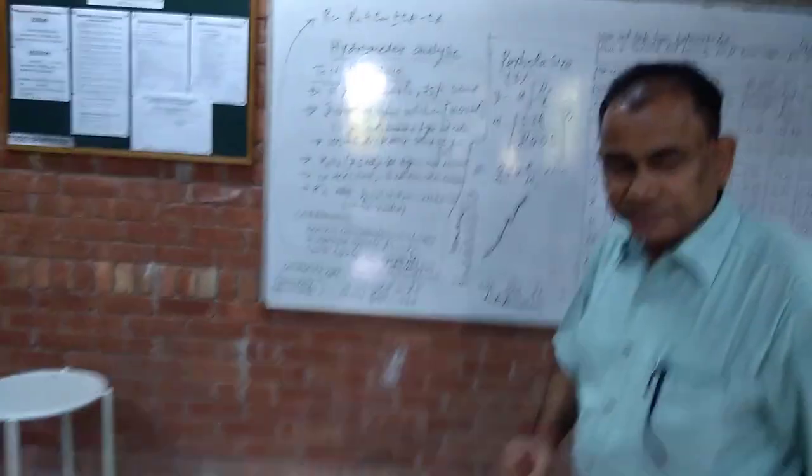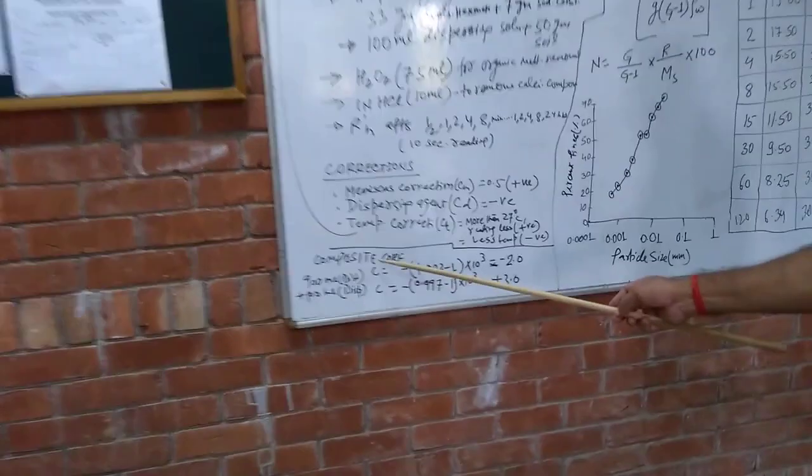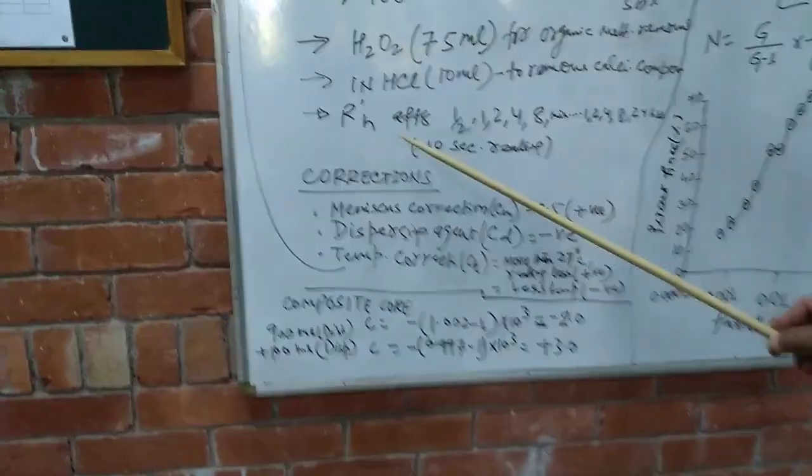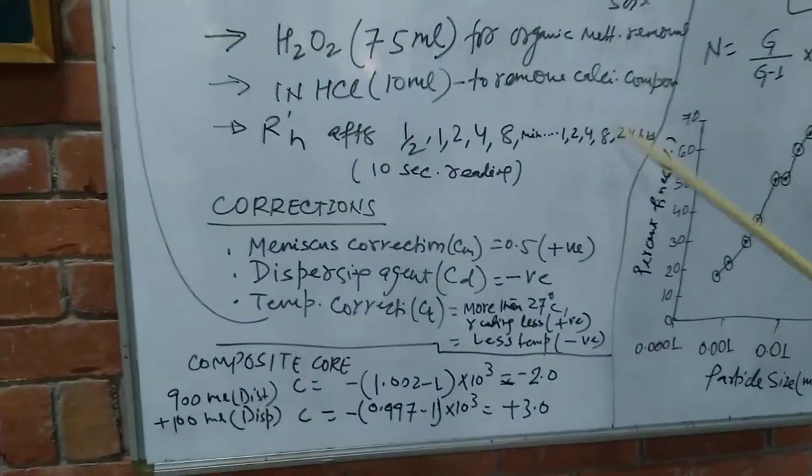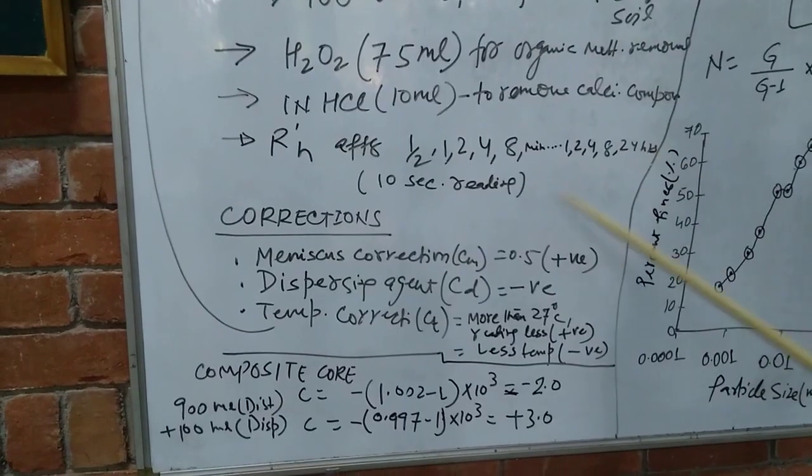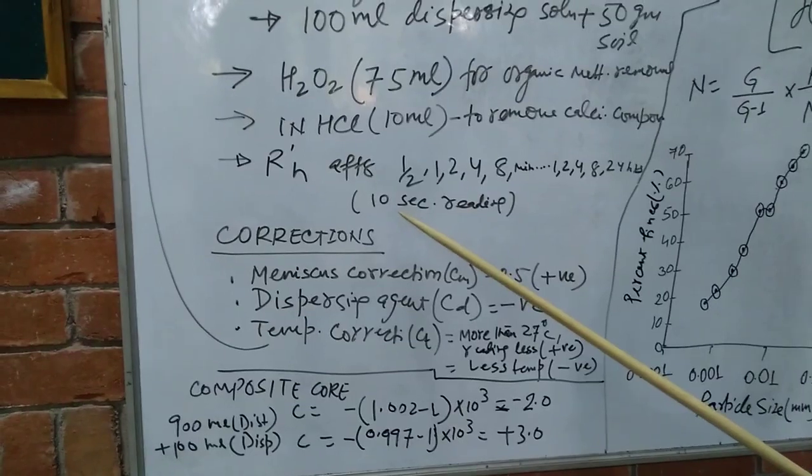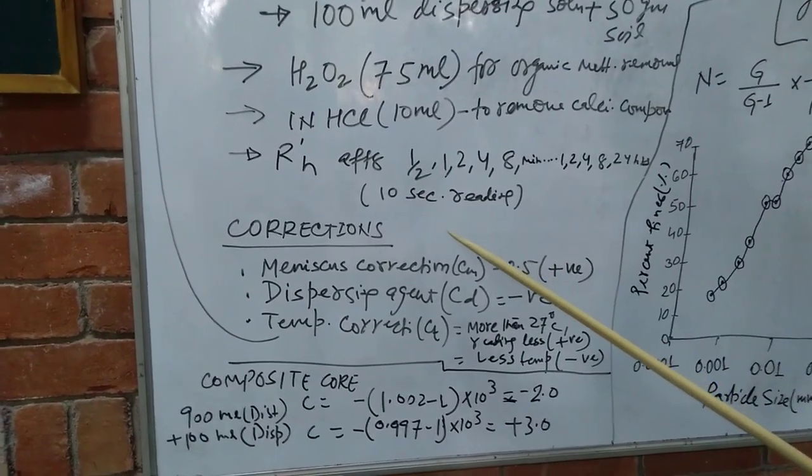Now we can see how we can find out the calculations. We can do this calibration composite correction. Now we can see the readings we have to take: normally half minute, one minute, two minute, four minute, eight minute. This can continue up to 24 hours. As I told you, we have to immerse the hydrometer inside the soil suspension only for 10 seconds, not more than that. Otherwise, the reading will not be correct.